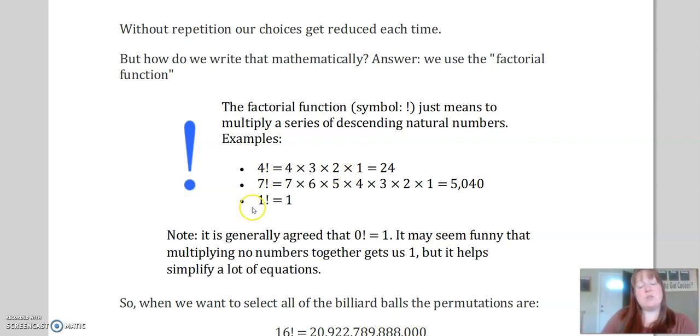One factorial is obviously one because one times every number below it until you get to one is just one times nothing else, just one. And then there's this kind of general consensus in math that zero factorial equals one. And it seems really odd, I know, but just believe me because we need that to be one because there are times when you're going to be dividing by zero factorial. And if it was anything other than one, it would make a problem. So basically zero factorial is one.